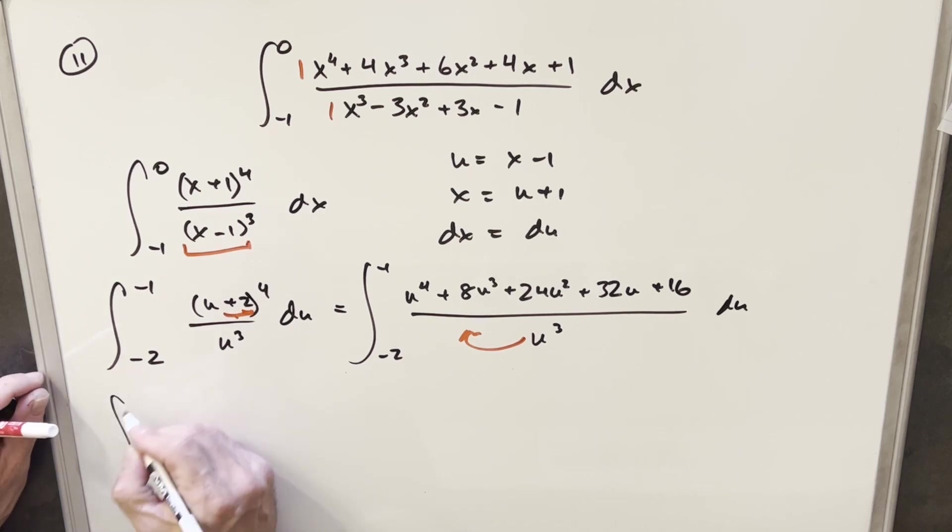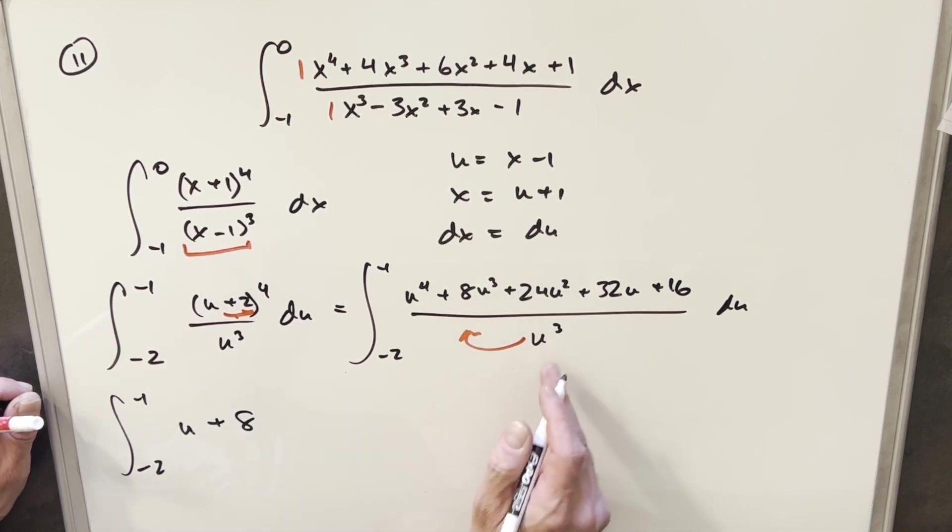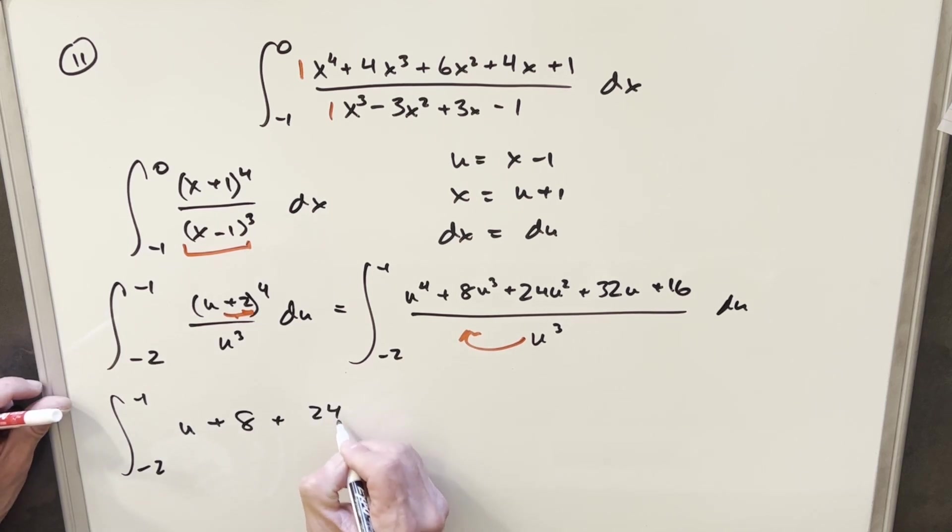So let's see what we have when we do that. When I divide u cubed into u to the 4th, I'm going to get just u. Then dividing 8u cubed by u cubed is just going to give me an 8. Then here, I'm going to get 24 over u. Here, I'm going to get 32 over u squared. And then for the last term, we're going to have 16 over u cubed.